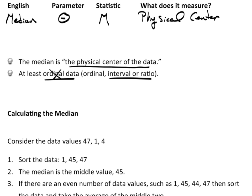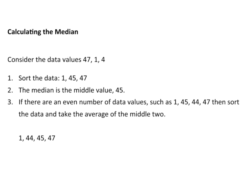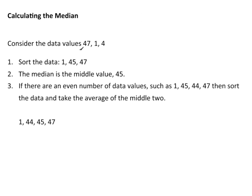Let's get into calculating the median. Suppose we have these data values: 47, 1, and 4. If I'm going to find the median, the first thing I need to do is sort the data. It doesn't make sense to say this one's in the center if the data's not sorted. So when I sort the data, I get 1, 45, and 47. The median is the middle value of 45.